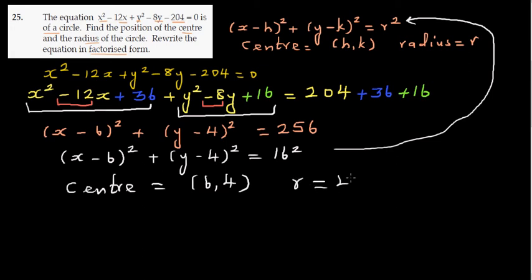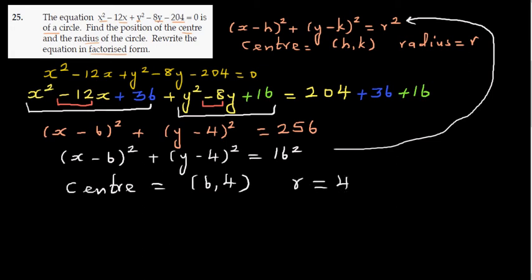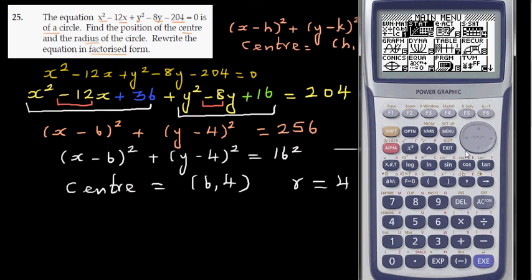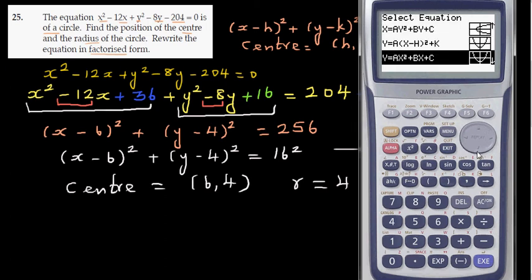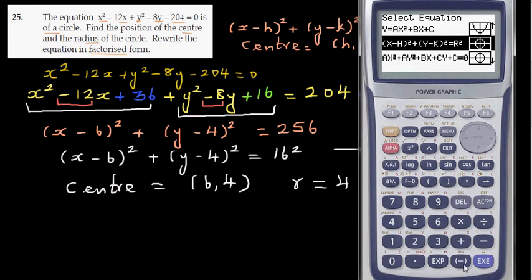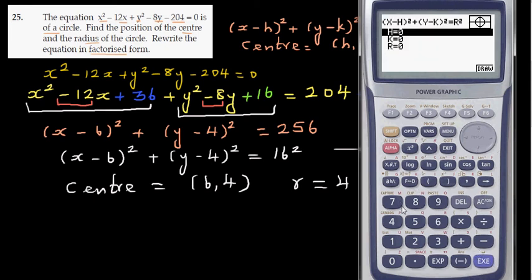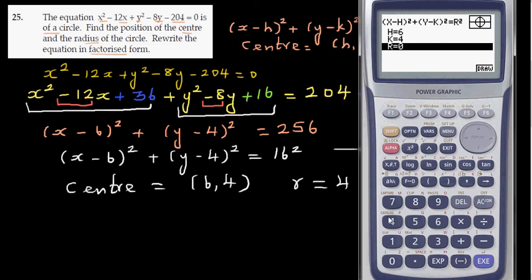Let's confirm this on a graphic calculator. Go to conics, then scroll down to circle. This is the circle form. Enter h equals 6, k equals 4, and the radius is also 4 — wait, since r squared equals 256 and 256 equals 16 squared, the radius is 16.